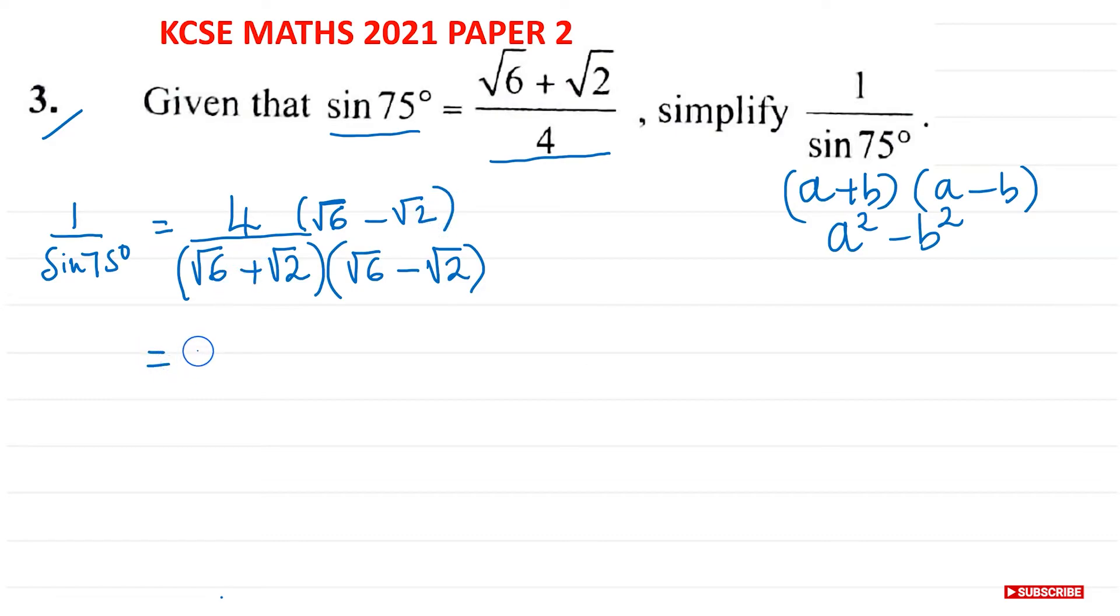So what you will have then is 4 root 6 minus root 2 over, so applying the difference of two squares, we'll have root 6 squared minus root 2 squared. So this will give you then 4 root 6 minus root 2 in a bracket.